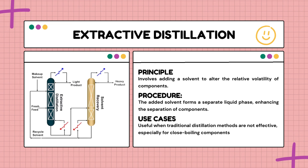This new liquid phase enhances the separation of components, especially those with similar boiling points. With the solvent in play, components that might have behaved similarly in traditional distillation now have different roles — like giving each component a distinct jersey, making them easier to identify and separate. Extractive distillation is used when traditional methods struggle with components that are too close in their boiling preferences.